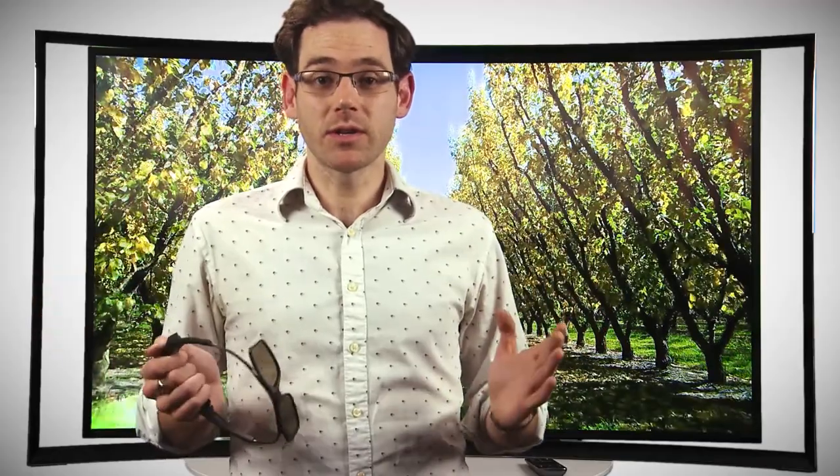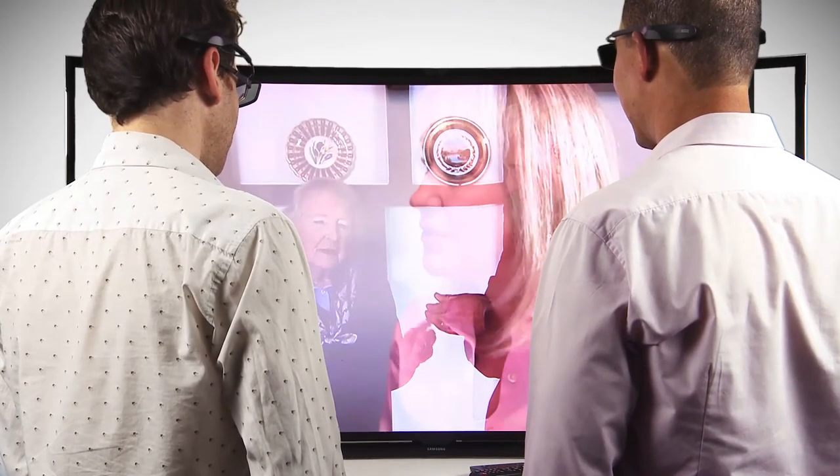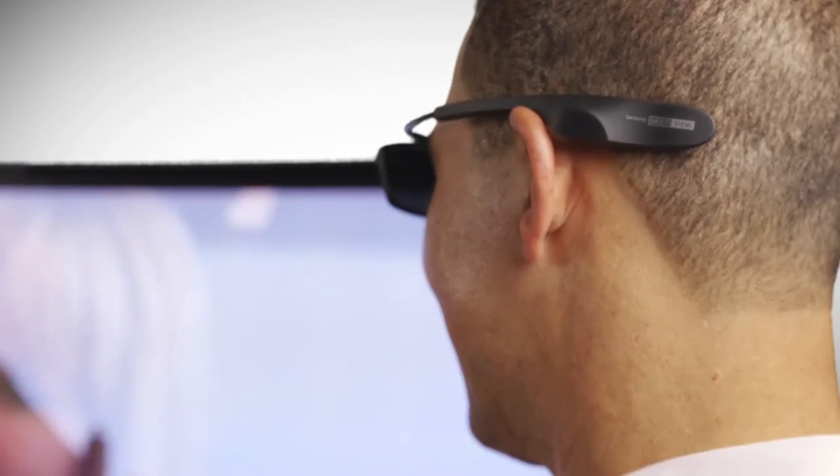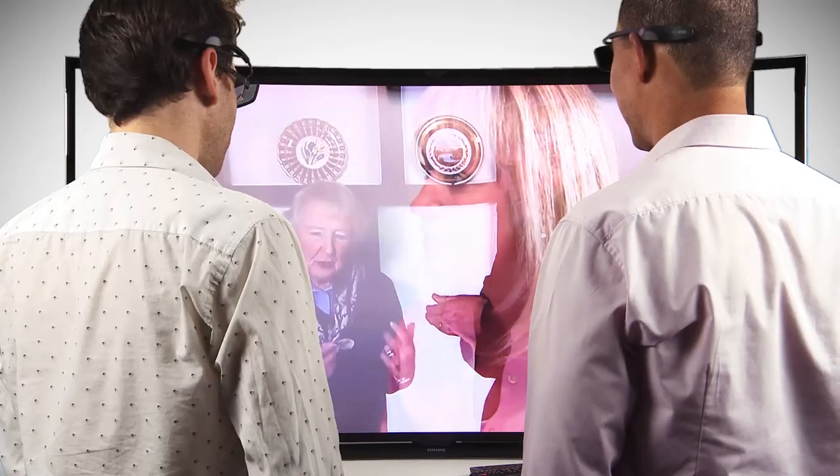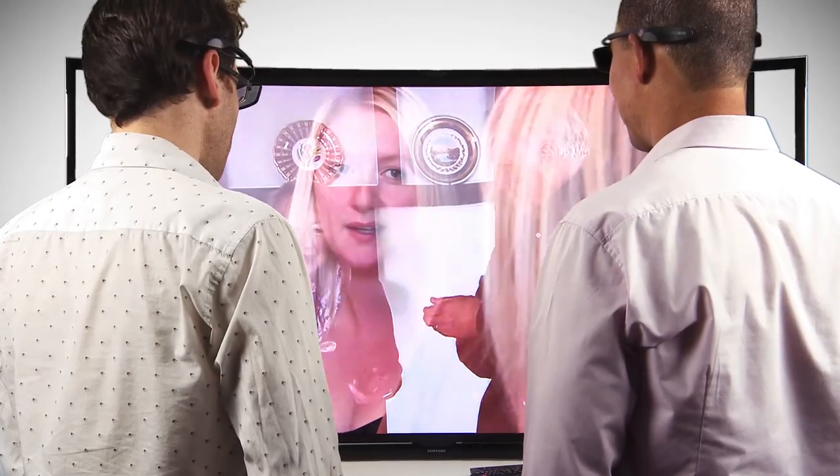But there's something else you can do with the glasses. Have you ever had an argument with your partner? They want to watch one thing, you want to watch something else. This TV is fitted with something called multi-view. What that means is, if you put the glasses on and your partner puts the glasses on, you can both watch different things at the same time.